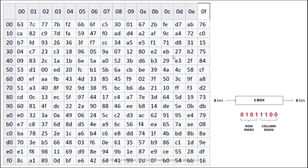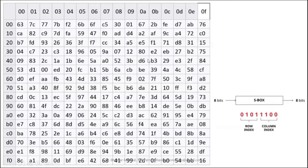The S-box used in AES has columns numbered 0 to F and rows numbered 0 to F in hexadecimal. To select a row you need 4 bits, and to select a column you need another 4 bits. All entries in the table are hexadecimal numbers, meaning every entry can be represented by 8 bits — a 2-digit hexadecimal number.